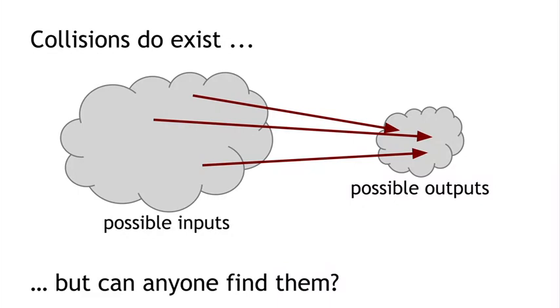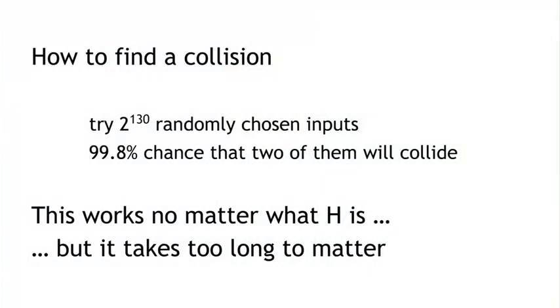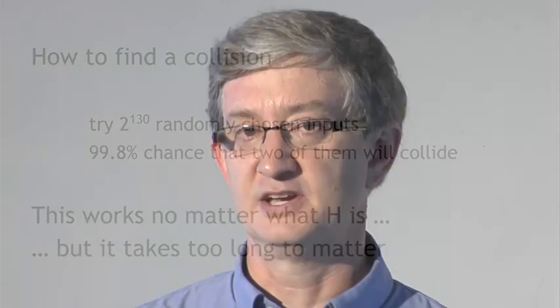So collisions do exist. The question is, are there any collisions that are findable by regular people using regular computers? Now, I said that it has to be impossible to find a collision. Let me tell you how to find a collision, because there's a method that's guaranteed to work. We're going to pick 2 to the 130 randomly chosen inputs. It turns out there's a 99.8% chance that at least two of them are going to collide. So this is a very simple method for finding a collision — it works no matter what the hash function is. But the problem is that this takes a very, very long time to do. You have to compute the hash function 2 to the 130 times, and that's an astronomical number.